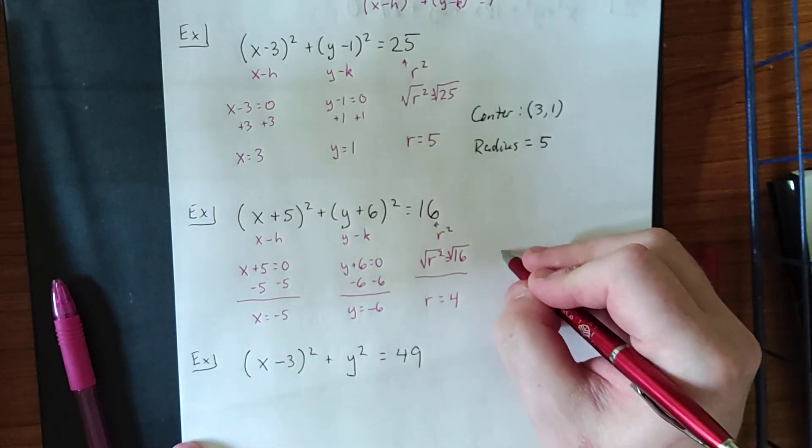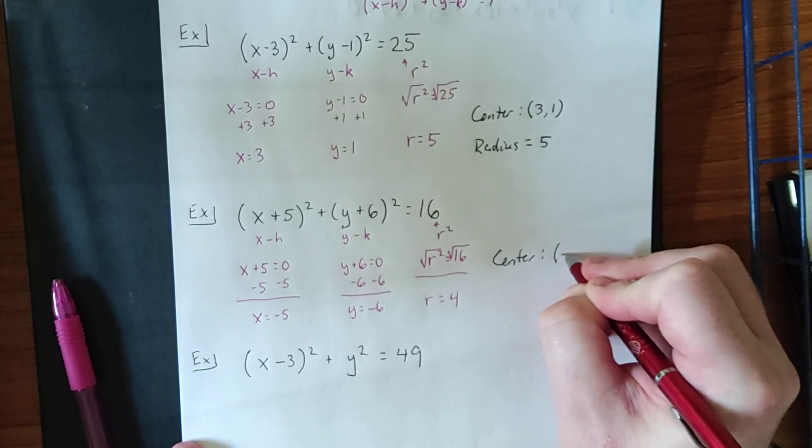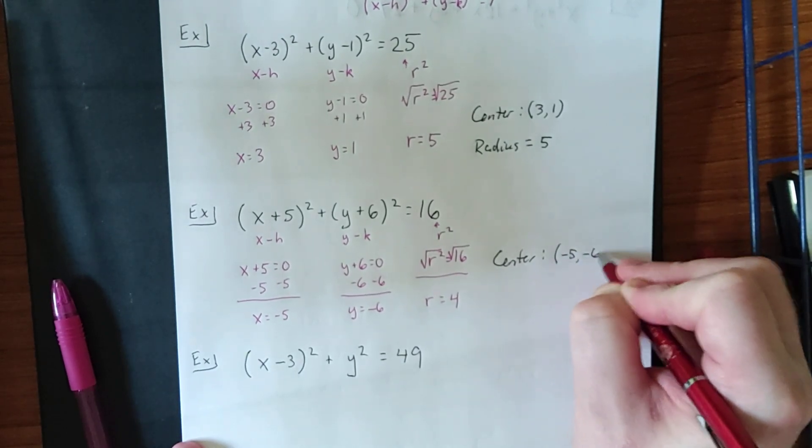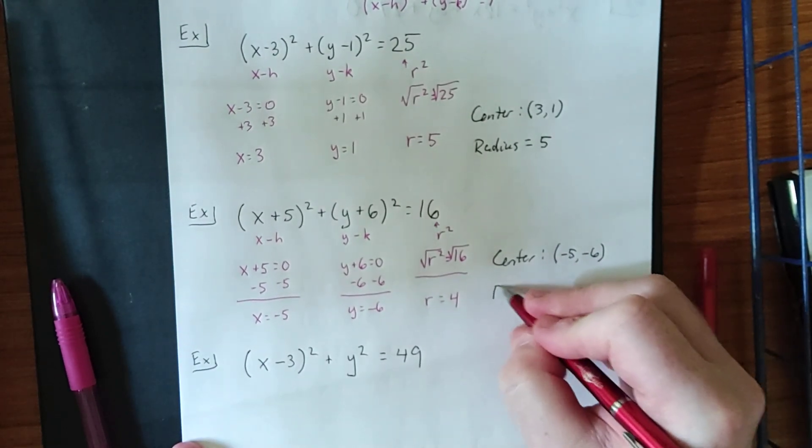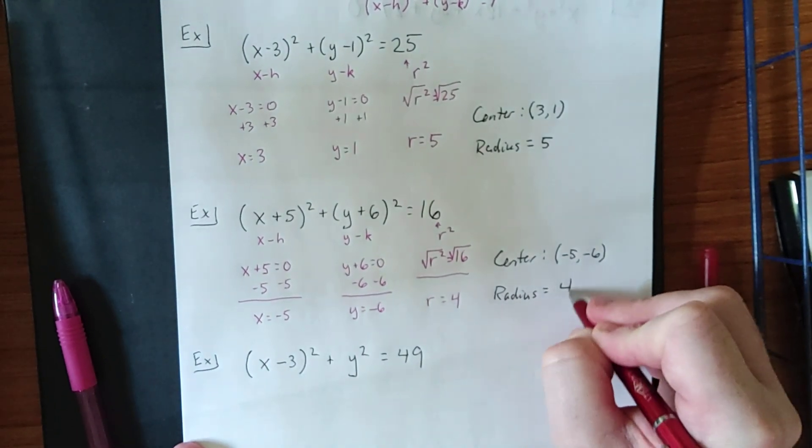So, once again, the interpretation is going to be that the center of this circle is going to be the ordered pair negative 5, negative 6. The radius of the circle is going to be equal to 4.